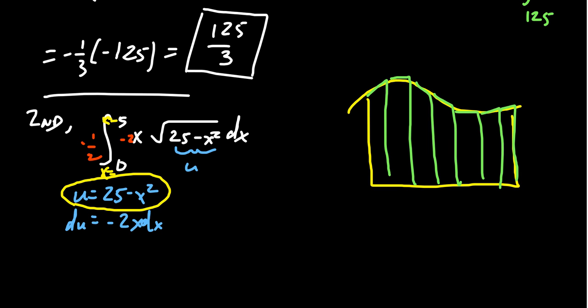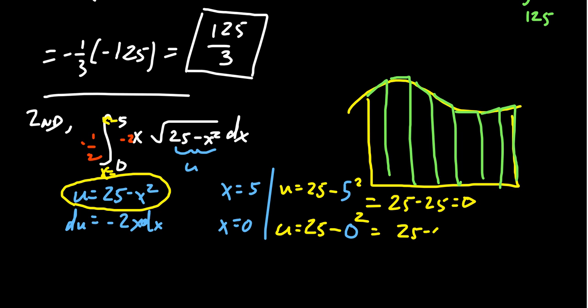This u-substitution technique, the change of variable, is like changing the shape. Because of this relationship, u equals 25 minus x squared, we can think of this as a function relationship. What happens when x equals 5? What happens when x equals 0? When x equals 5, if we plug this into the function, u equals 25 minus 5 squared, which simplifies to 25 minus 25, which equals 0. When x is 0, u equals 25 minus 0 squared, which is 25.